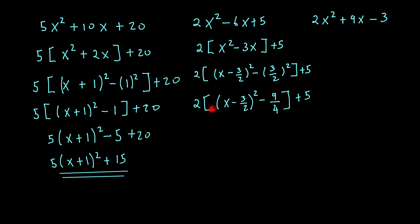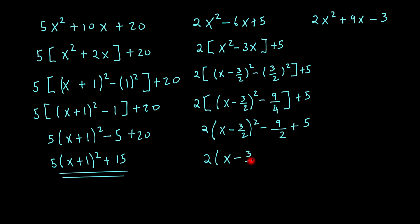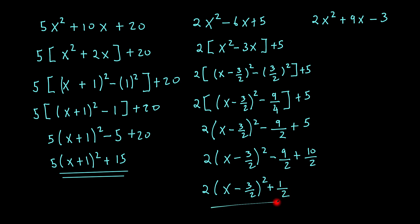Now I'm going to bring in my 2 and remove the square bracket, so I'll get 2 times x minus 3 over 2 all squared. Now I need to multiply 9 over 4 by 2, so that will simply give me just 9 over 2, that's plus 5. Now if I convert 5 into a fraction with a denominator of 2, that will be 10 over 2. That will be x minus 3 over 2 all squared, and that would be minus 9 over 2 plus 10 over 2. So my final answer would be 2 times x minus 3 over 2 all squared plus 1 over 2. And that would be my final answer.